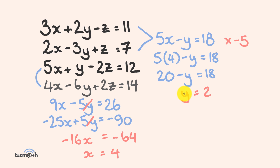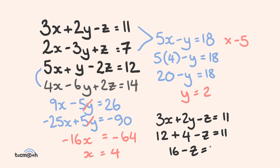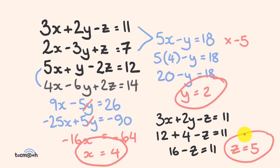Now with x equals 4 and y equals 2, we substitute into one of our original equations to find z. Using equation 1: 3x plus 2y minus z equals 11. So 3 times 4 is 12, plus 2 times 2 is 4, minus z equals 11. That gives 16 minus z equals 11, so z equals 5. We have all three variables: x equals 4, y equals 2, and z equals 5.